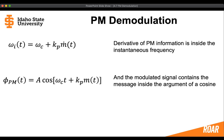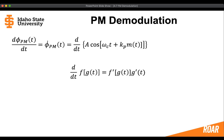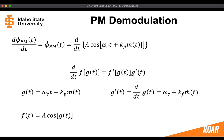The actual phase modulated signal is going to look like this. We can see that the modulated signal contains the message inside the argument of the cosine. If we follow a similar method to frequency modulation and take the derivative, we again need to use the chain rule, where gt is the argument of the cosine and f is a times cosine of gt. The derivative of gt is the carrier frequency plus some constant multiplied by the derivative of the message, and the derivative of f is minus a times the sine of gt.